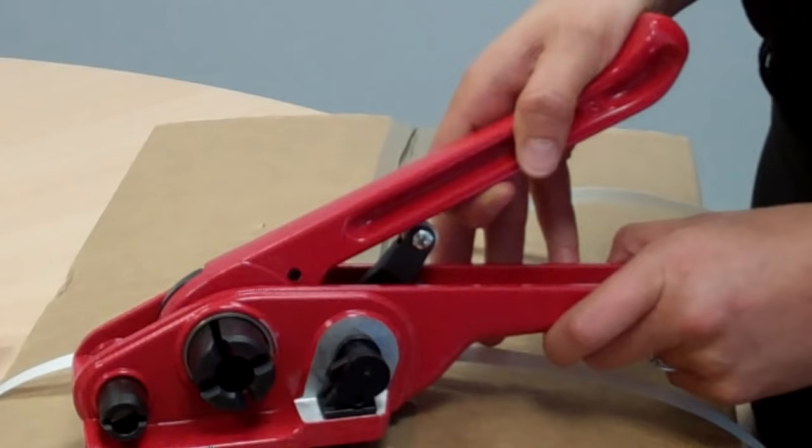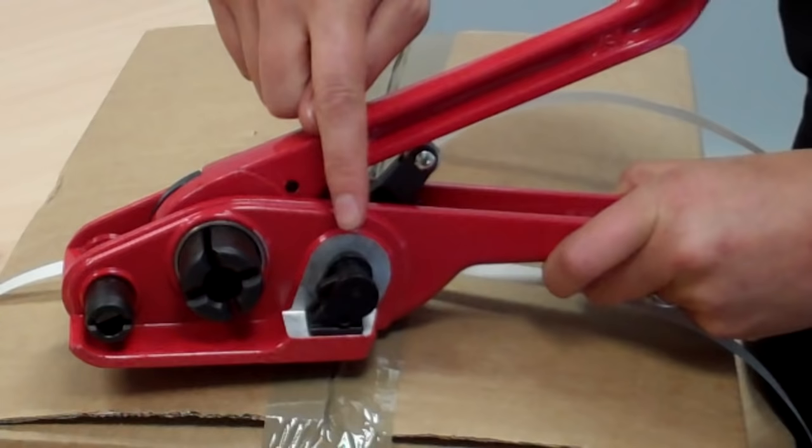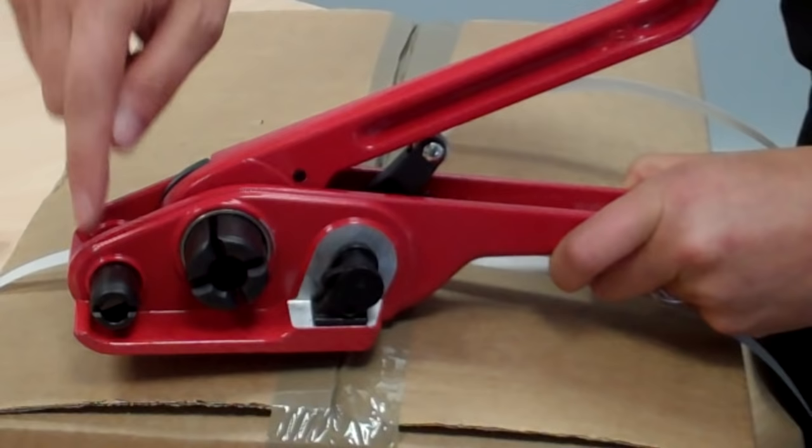First, we're going to look at the tensioner tool. You can see it's got three key features: at the back here you've got a clamp, a ratchet in the middle, and a cutter on the front.